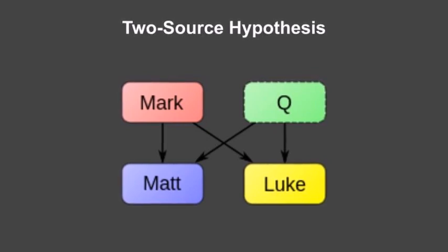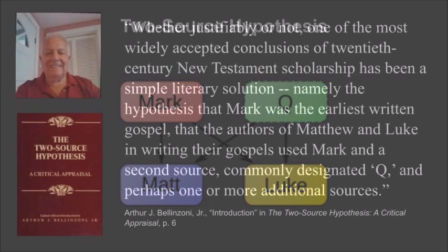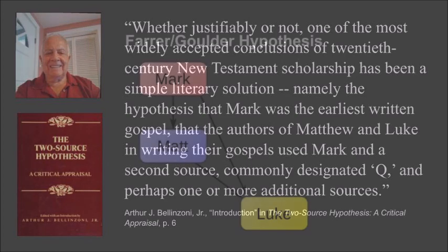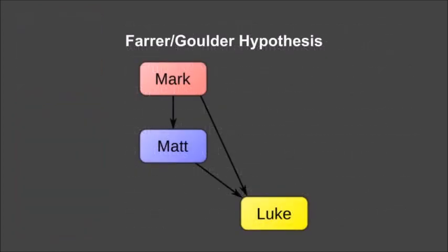Until fairly recently, this hypothesis was thought to be the assured result of biblical scholarship. As Arthur Bellanzoni says, one of the most widely accepted conclusions of 20th century New Testament scholarship has been the hypothesis that Mark was the earliest written Gospel, that the authors of Matthew and Luke used Mark and a second source commonly designated Q, and perhaps one or more additional sources. But for good reason, the two-source hypothesis has waned in popularity among scholars, despite still being the most widely held.